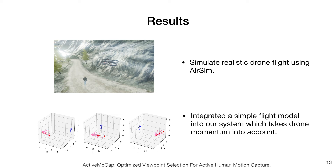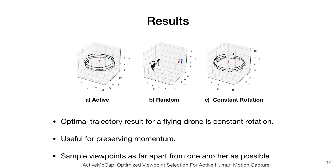The second set of experiments is to simulate realistic drone flight using AirSim, a drone simulator. However, for our method to work, we need a good estimation of where the drone will be in future frames. In order to do so, we have integrated a simple flight model into our system. Since our flight model takes drone momentum into account, the optimal trajectory result for a flying drone turns out to be constant rotation, which is very useful for preserving momentum. This is very reasonable since it allows the drone to sample viewpoints as far apart from one another as possible while keeping the subject in view. We conclude that this is the best trajectory to choose for estimating the pose of a single person in the case of no obstacles blocking the circular flight path.